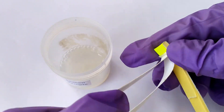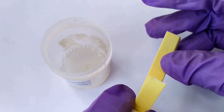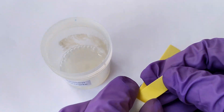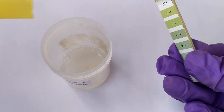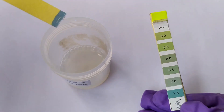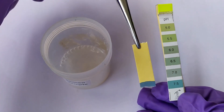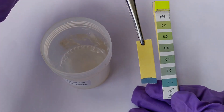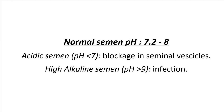Take a strip of either broad range or narrow range pH paper and touch one surface onto the semen sample. Observe the pH paper for color change. A more accurate laboratory pH meter can also be used to determine the pH. Normal semen has a slightly alkaline pH ranging from approximately 7.2 to 8. Acidic semen could be indicative of a blockage in one or both seminal vesicles, while a high alkaline pH could be a result of infection.